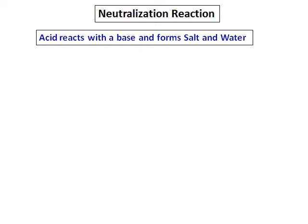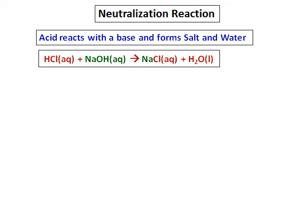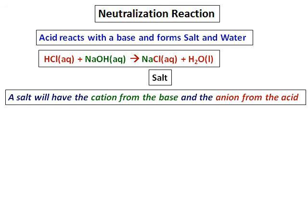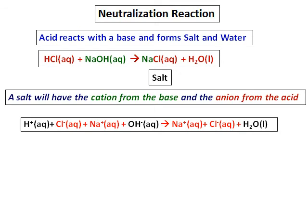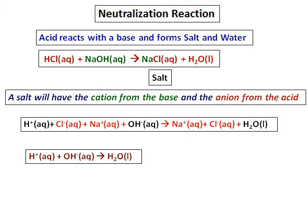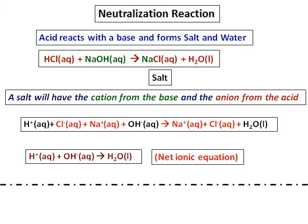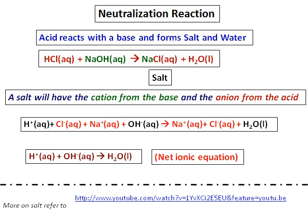When an acid reacts with a base, it forms a salt and water — this is called a neutralization reaction. Consider the reaction of a strong acid and strong base: the compound NaCl is the salt, where the Na⁺ cation comes from the base and the Cl⁻ anion comes from the acid. Writing the full ionic equation, the H⁺ and OH⁻ ions are the only ones that react; all others cancel. The net ionic equation is simply H⁺ + OH⁻ → H₂O.